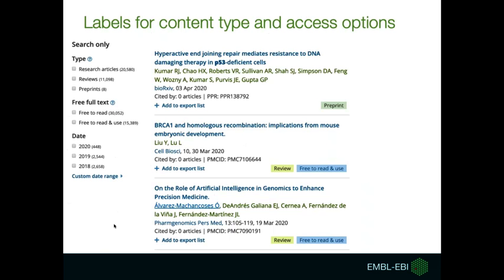Notice that the different labels will be displayed in your search results even when you do not use the filter options. It helps you to intuitively identify the type of publication and access options.